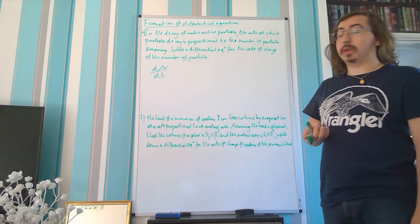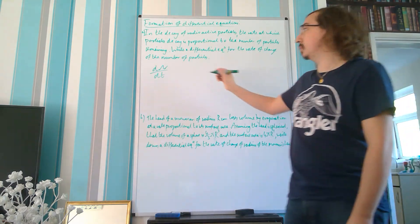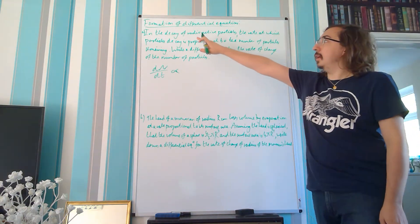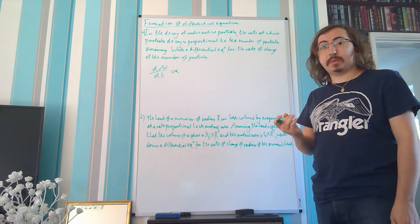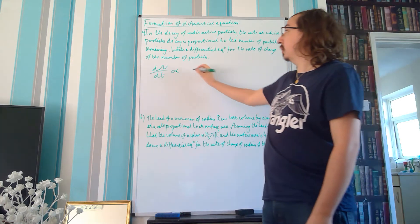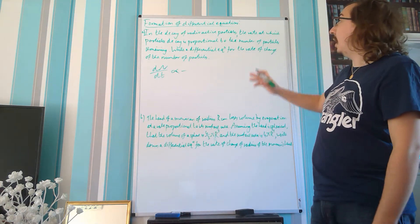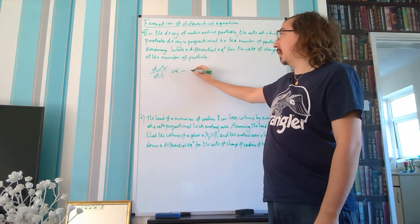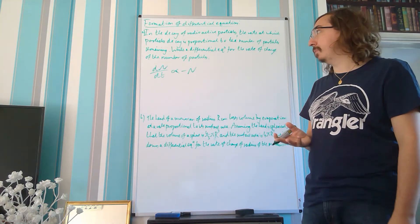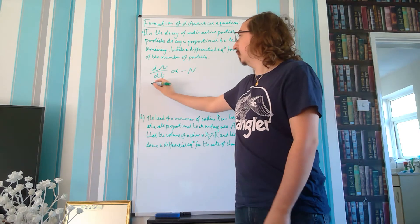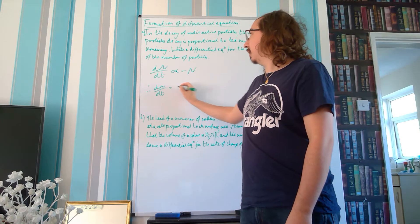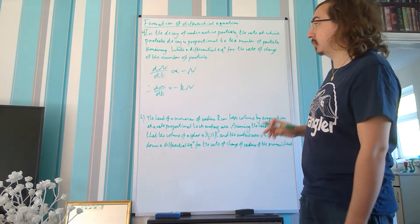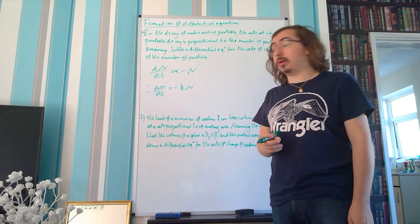We then check whether it's equal to or proportional to — in this case it's proportional to, so we put our proportionality symbol in. It is a radioactive decay, meaning a decrease, so we need a minus sign. It's proportional to the number of particles remaining, which is capital N, so it's proportional to minus N. Replacing the proportionality symbol with an equals and a constant, dN/dt equals minus KN.